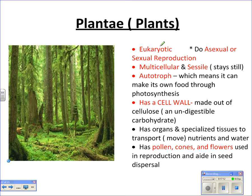The plant kingdom is eukaryotic, reproduces both asexually and sexually, is multicellular and sessile — meaning it stays still. It's an autotroph that makes its own food through photosynthesis. All plant cells have a cell wall made out of cellulose, which is an indigestible carbohydrate also called fiber. Plants have organs and specialized tissues to transport nutrients and water, and use pollen, cones, and flowers to aid in reproduction and seed dispersal.